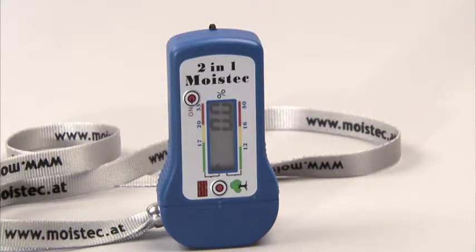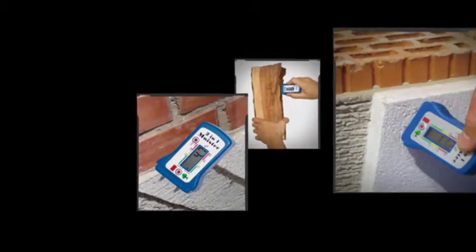To save energy, the meter turns off automatically after 40 seconds. The Moistek 2-in-1 Moisture Meter.